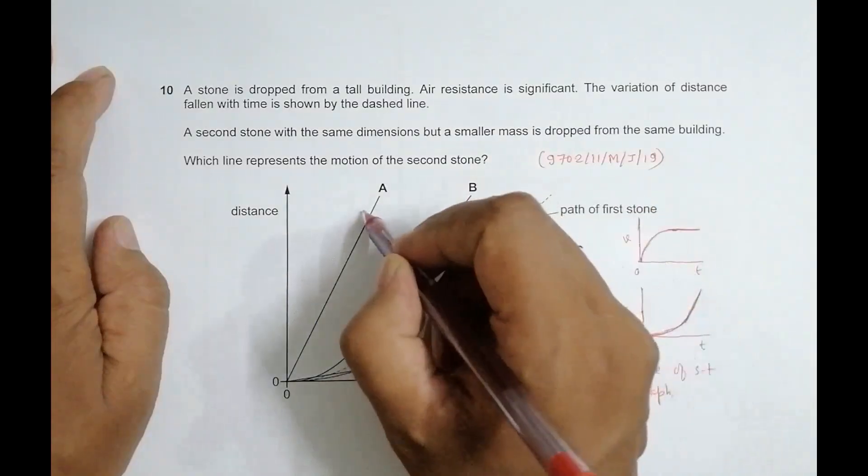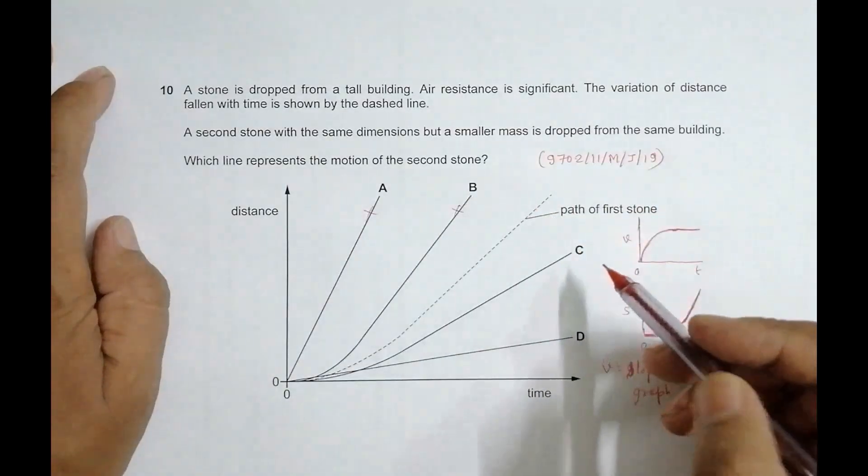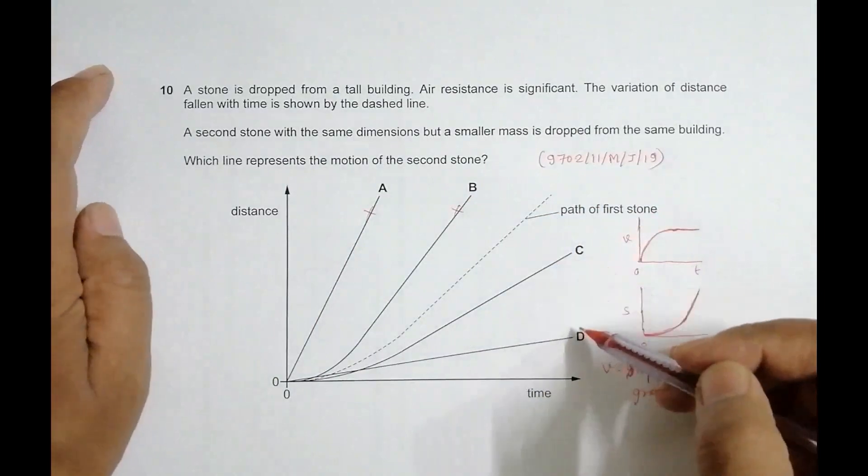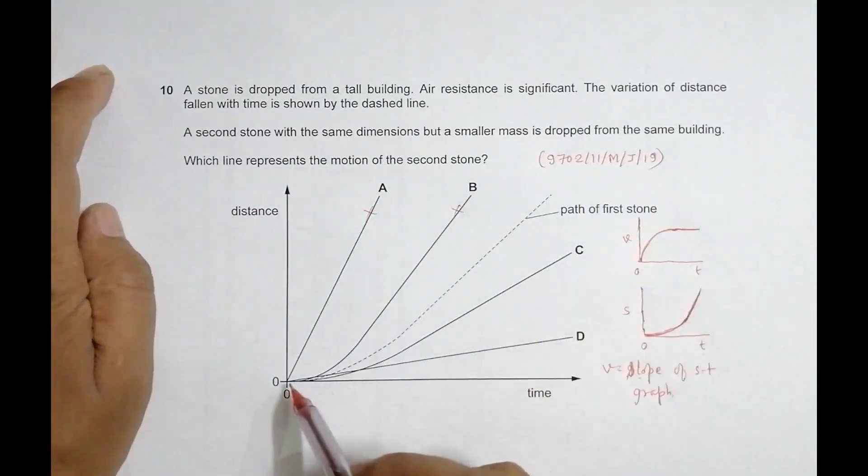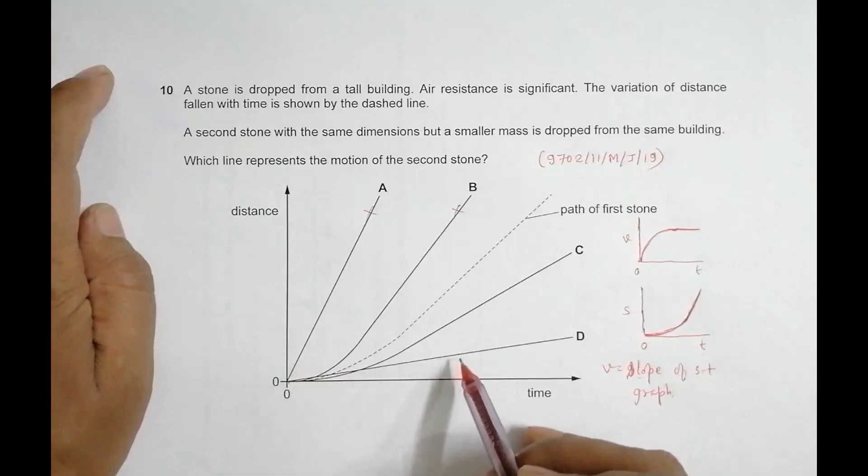If you look at the graph, D is a straight line graph, which means the slope is constant. Slope constant means that v is constant right from the beginning, which is not true.